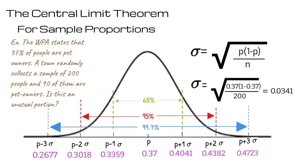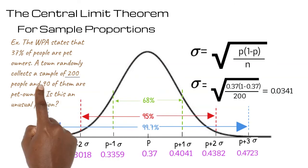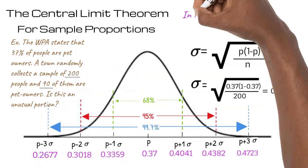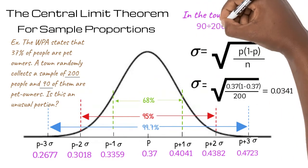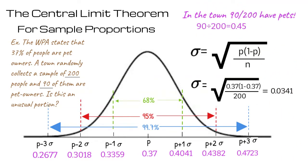Recall that in our town there are 200 people and 90 of them have pets. In the town, 90 out of 200 people have pets. When we divide 90 by 200 we get 0.45.